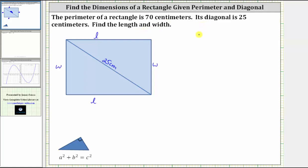Because the perimeter is 70 centimeters, we know that 2L plus 2W equals 70. Now from here, let's write the length L in terms of W by solving this equation for L.